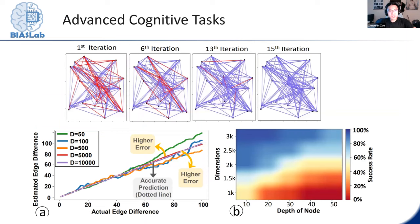Beyond basic retrieval, more advanced operations are supported efficiently: graph reconstruction through edge recovery, graph structure comparison via a dot product between two graph hypervectors, and shortest path approximation.